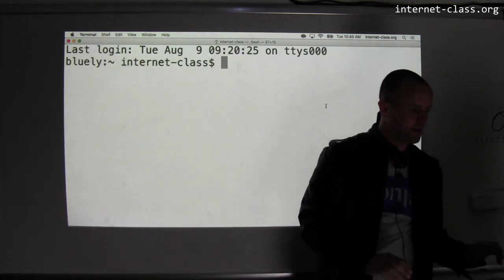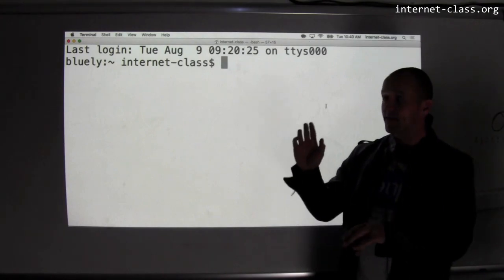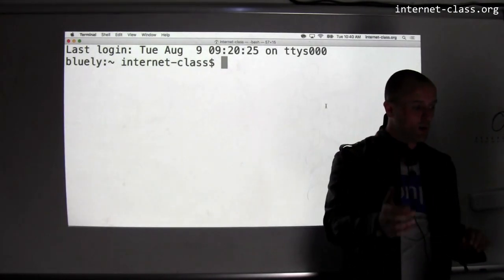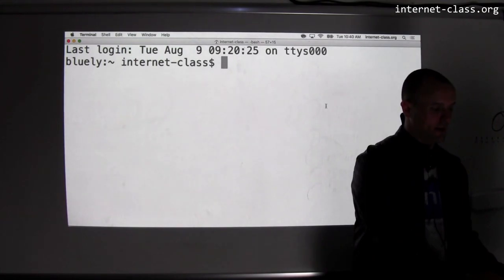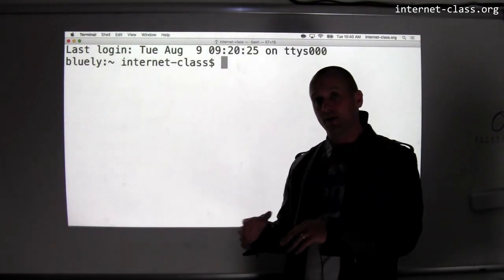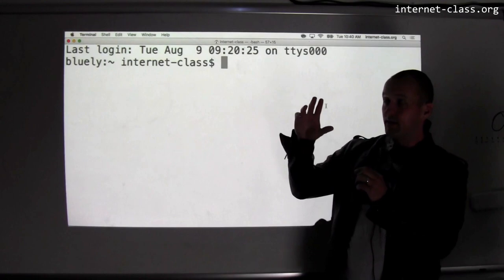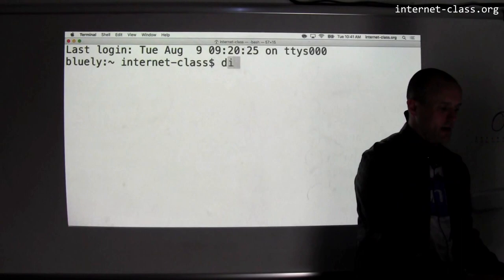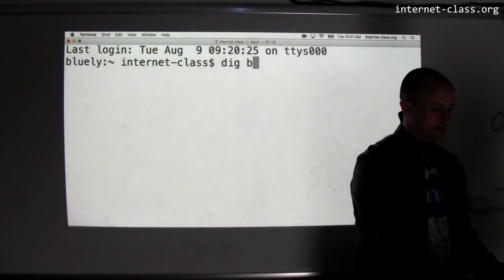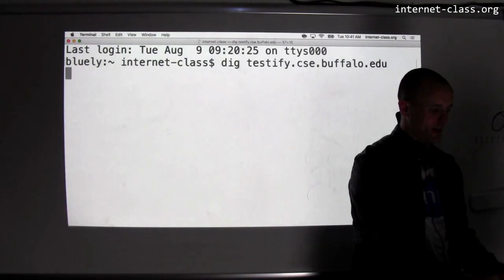To find out other things about the Internet, there are these fantastic suites of networking tools that you can use to find out things. So for example, one thing we're going to talk about is how do we translate the names that we use to name computers on the Internet to the addresses that the Internet uses internally. And there's a tool for doing this that you can install on your machine fairly easily.